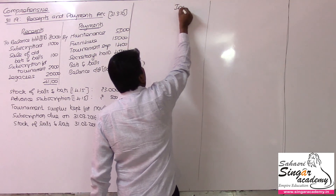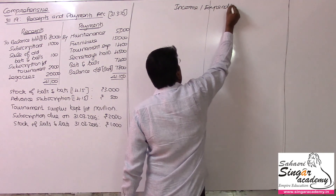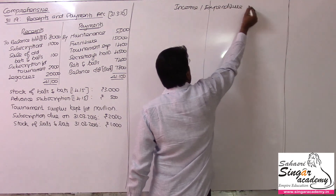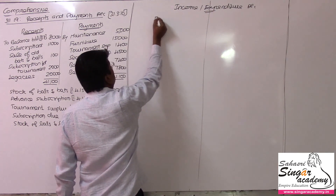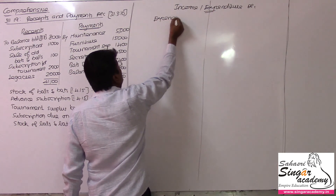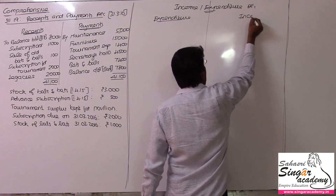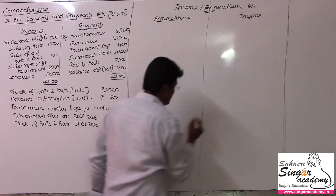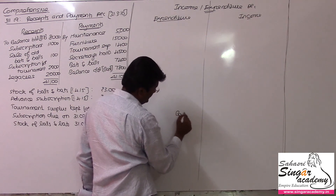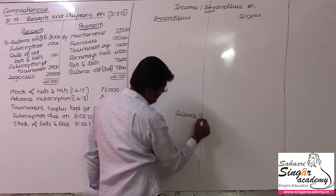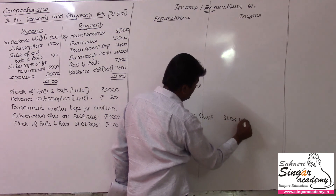Income and expenditure account — credit side is the income side. So we call this the income side of income and expenditure, and then balance sheet as on the same date 31st March 2016.